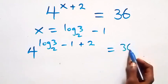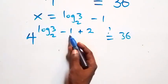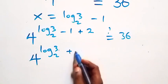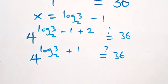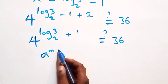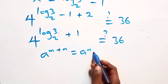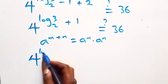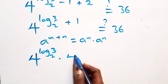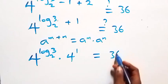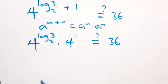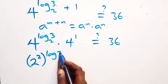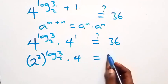Here minus 1 plus 2 gives plus 1, so we have 4 raised to power (log₂3 plus 1) equals 36. Applying the law a^(m+n) = a^m × a^n, this becomes 4 raised to power log₂3 times 4 raised to power 1, which is 4. We can also write 4 as 2 squared, so we have 2 raised to power 2 times log₂3 times 4 equals 36.